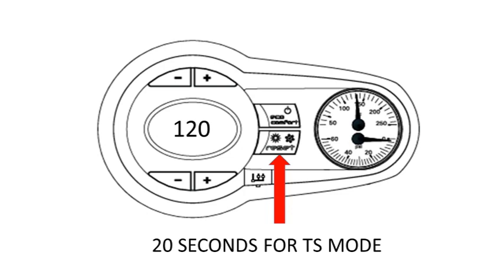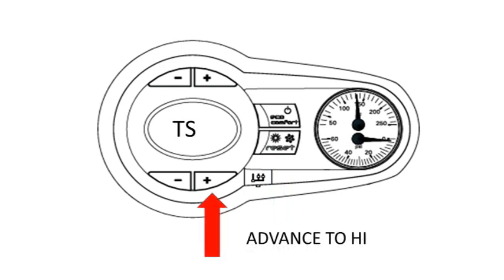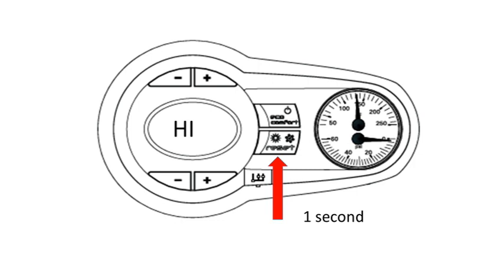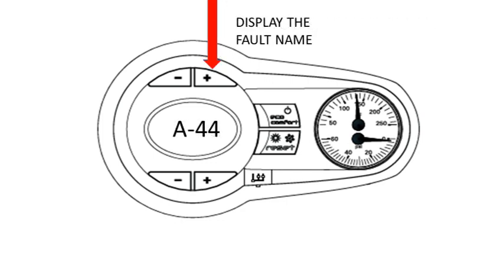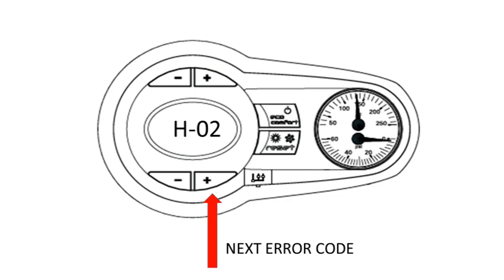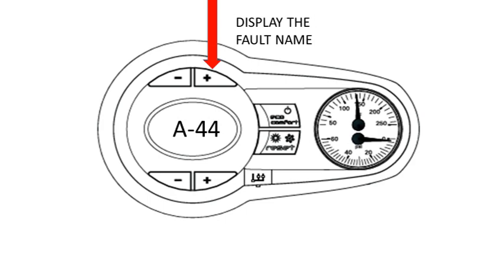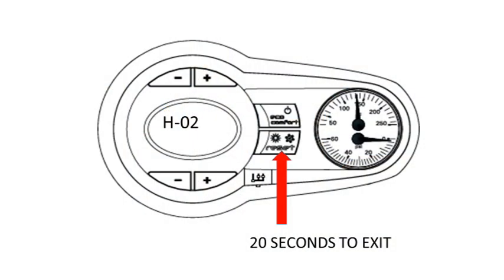If you need to look at the history of the error codes, press the reset button for 20 seconds. TS will be displayed. Press the bottom plus button until HI is displayed, then press reset for one second to enter the history mode. H01 will be displayed. Press the top plus or minus button to display the fault code. To exit this mode, hold the reset button for 20 seconds to return to the home screen.